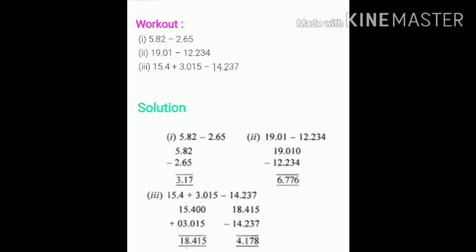Question number three: 15.4 plus 3.015 minus 14.237. So first according to BODMAS rule we have to add by changing the numbers into like decimal forms.